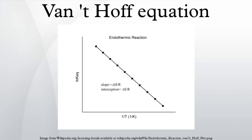The Van't Hoff equation in chemical thermodynamics relates the change in the equilibrium constant of a chemical reaction to the change in temperature, given the standard enthalpy change for the process. It was proposed by Dutch chemist Jacobus Henrikus Van't Hoff in 1884.